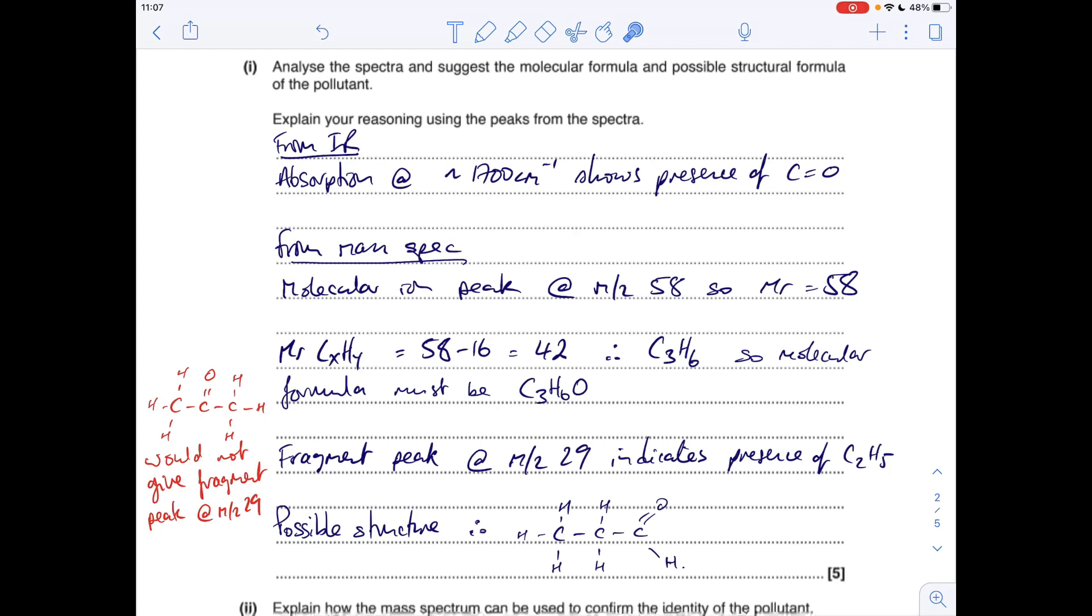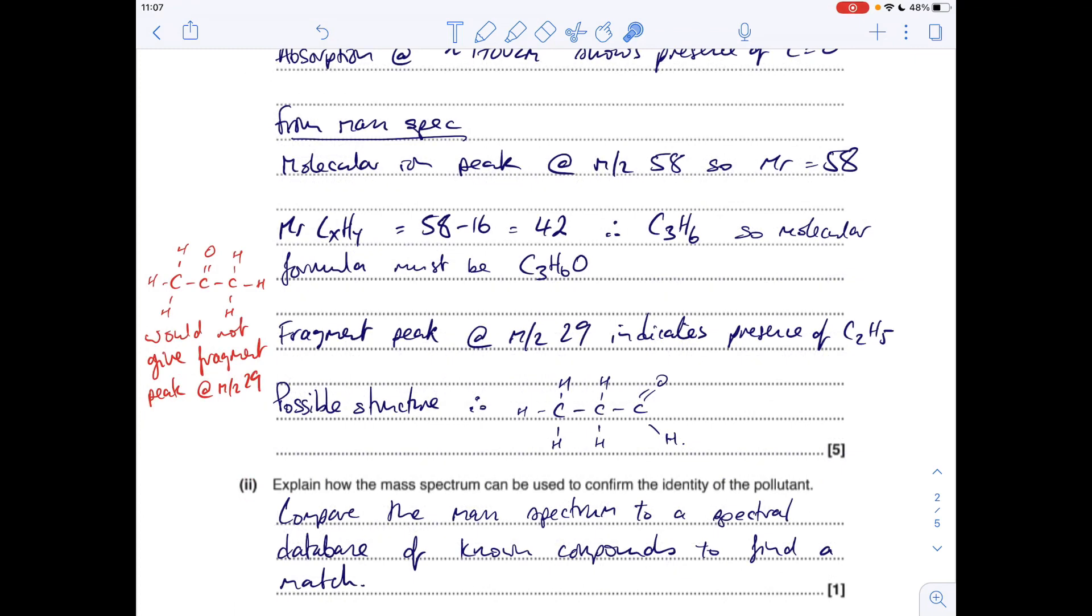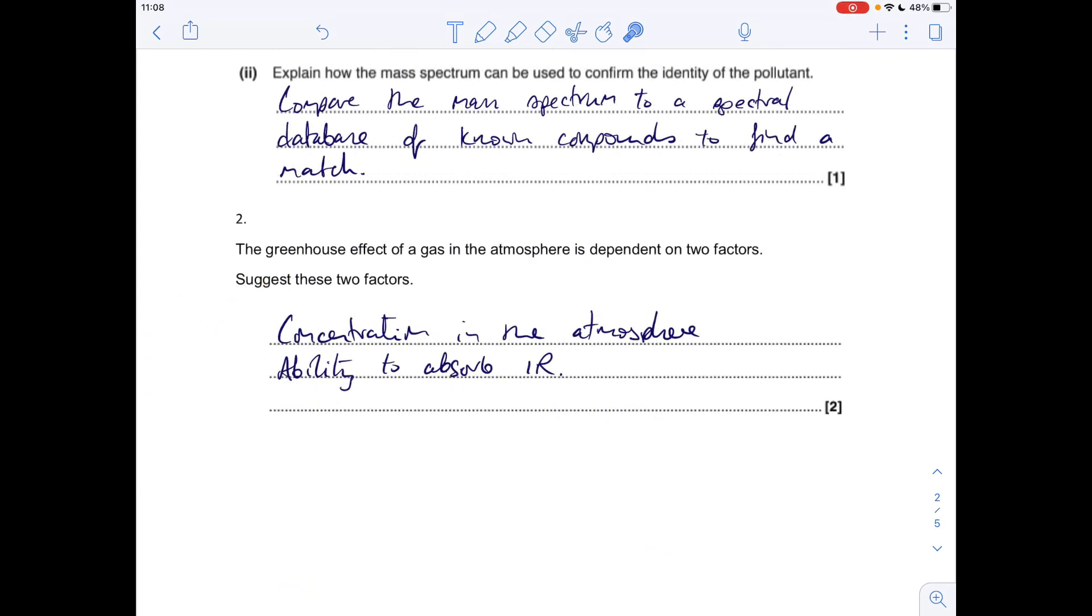It can't produce that fragment of an ethyl group. And the last part of the question, how could the mass spectrum be used to confirm the identity of the pollutant? All I'm saying here is compare the mass spectrum to a spectral database of known compounds and get a match.